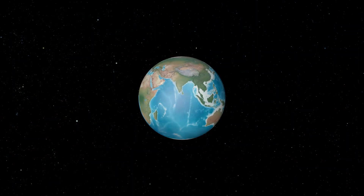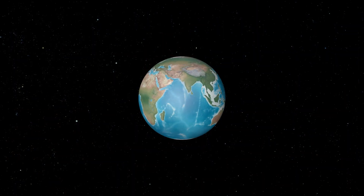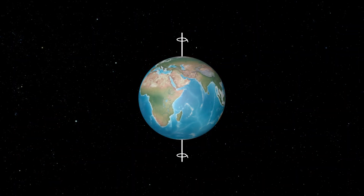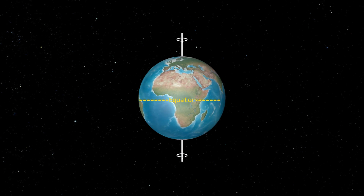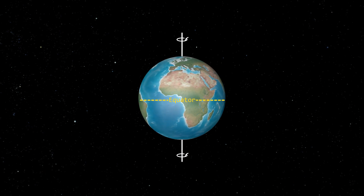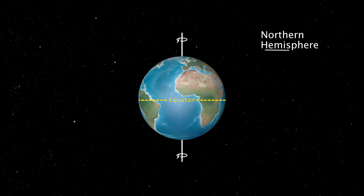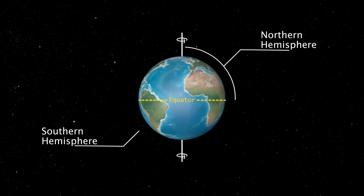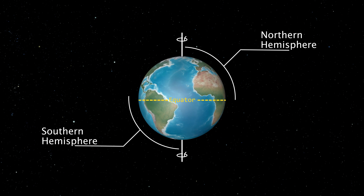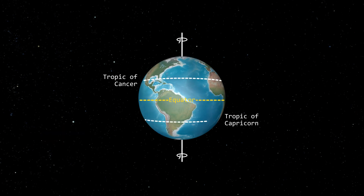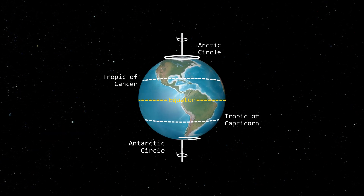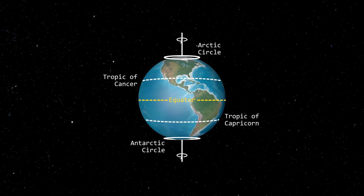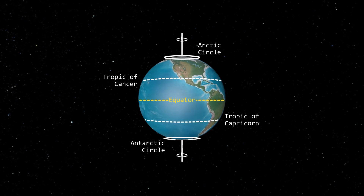There are five major lines of latitude on the globe. The Earth rotates around an axis that goes through the North and South Pole, and from there, the equator is a line of latitude that cuts it in half, splitting the Earth into the Northern and Southern Hemisphere. And then the tropics of Cancer and Capricorn. There are also two polar circles — the Arctic and the Antarctic circles — and their definition actually depends on the sun.